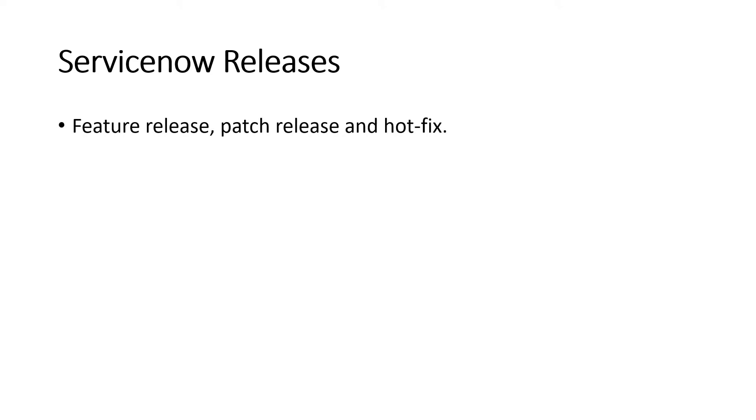ServiceNow releases is not a complex concept — it's pretty simple. It's the same as Android mobile versions: right now we have Android P1, before that Android Oreo, Nougat, Marshmallow — different version releases. Each version brings new features, new application updates, and more. In the same way, ServiceNow also releases versions, and just like Android names them, ServiceNow names its releases after cities — like London, Quebec, Rome, San Diego.